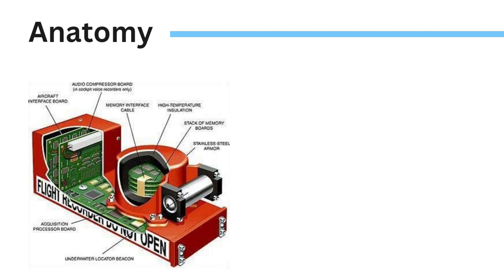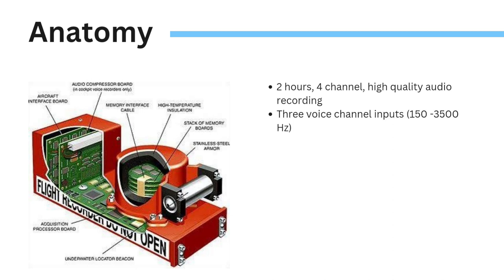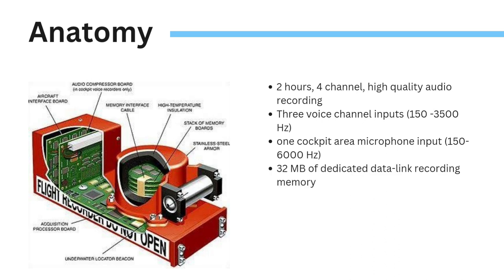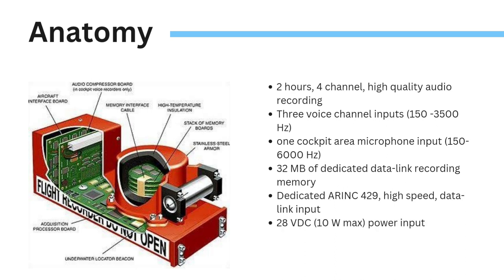The following are the functionality features of a modern CVR: high quality audio recording for up to 2 hours into 4 channels; 3 voice channel inputs operating within the frequency of 150 to 3,500 Hz; one cockpit area microphone input operating on a frequency of 150 to 6,000 Hz; 32 MB of dedicated data link recording memory; a dedicated ARINC 429 high speed data link input; and 24V DC power input.